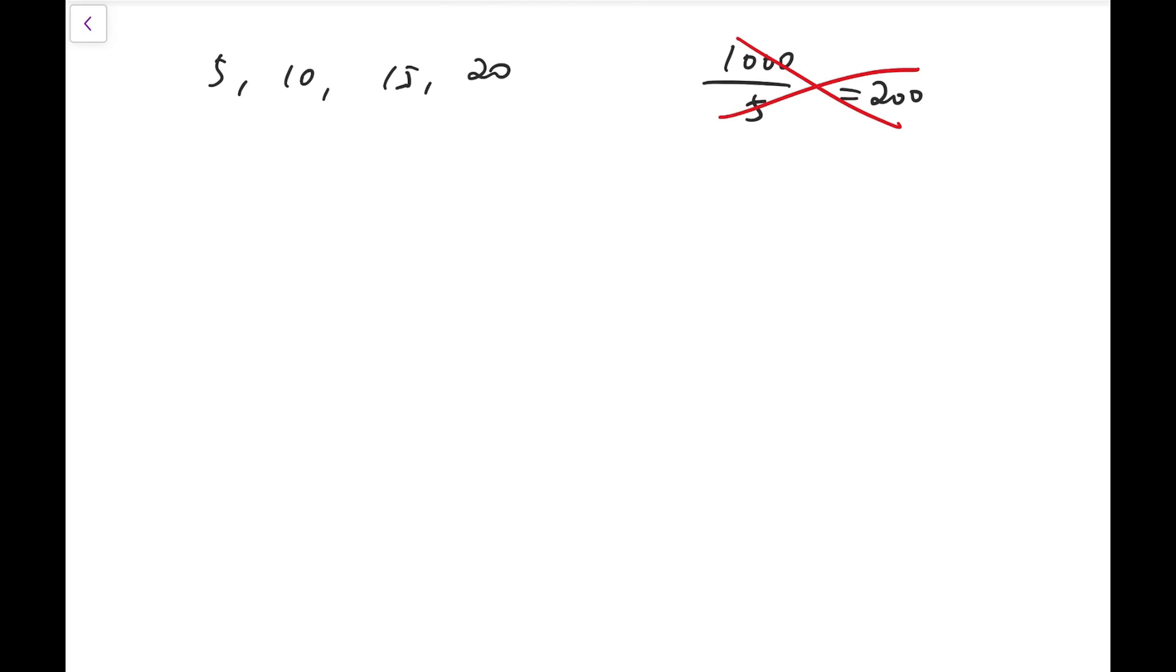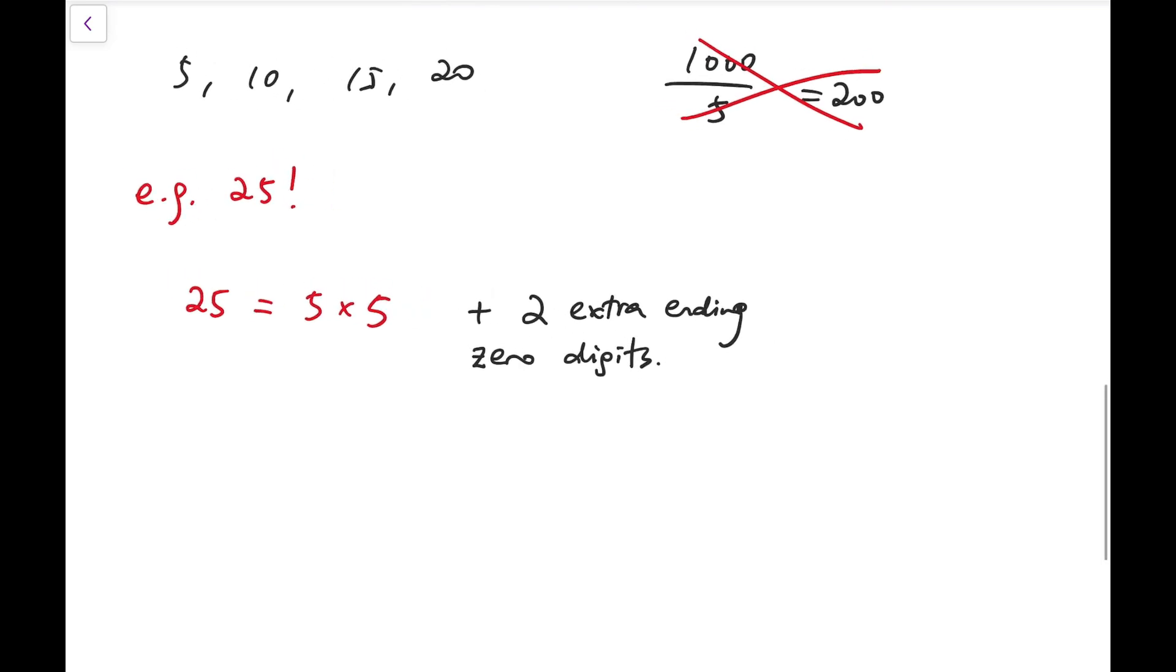Because by counting the number of prime factors, there are some special cases that we might get even more prime factors 5. For example, we multiply up to 25 factorial. Notice that for 25, we actually have 5 times 5. So when we multiply this number, we add two extra prime factors 5 into the product. So at this point, it should be adding two extra ending zero digits. Similarly, if I can reach 50 factorial, 75 factorial, 100 factorial, then it's still plus 2, plus 2, and plus 2.